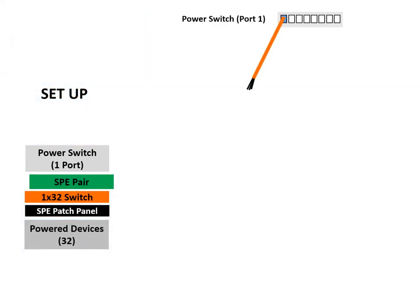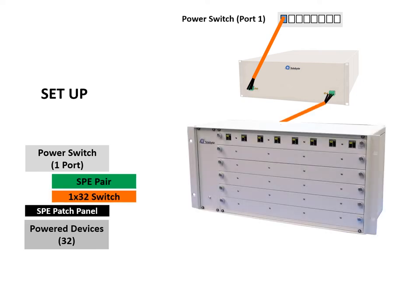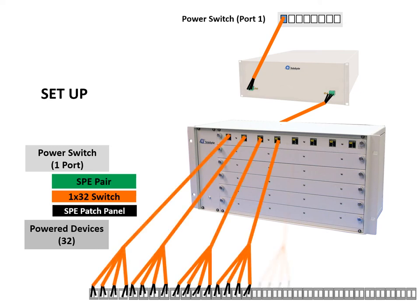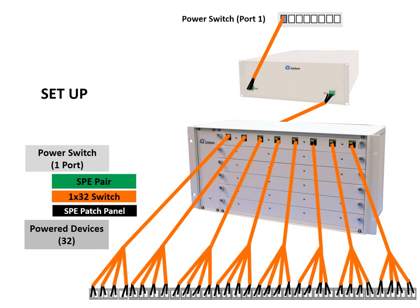Let's make our connections. Port 1 of the power switch is connected to the front of the model 4950 cable emulator, which is in turn connected to the back of the 600 switching matrix module. Eight cables connect the front of the module to a custom 32 port SPE patch panel that in turn is connected to the powered devices.